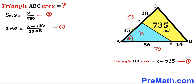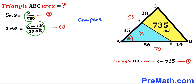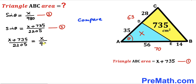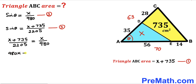We now have equations two and three with identical left-hand sides, so we equate the right-hand sides: (x + 735) / 2205 = x / 980. Cross multiplying gives: 980x + 72300 = 2205x.